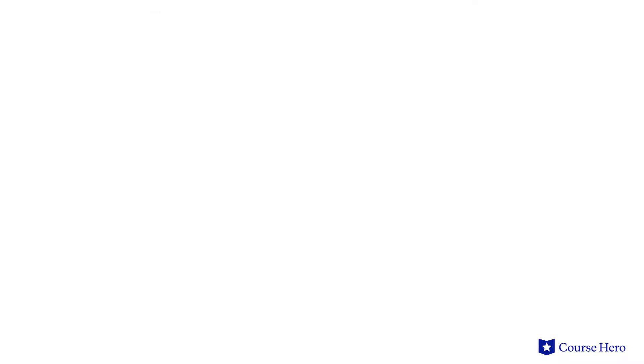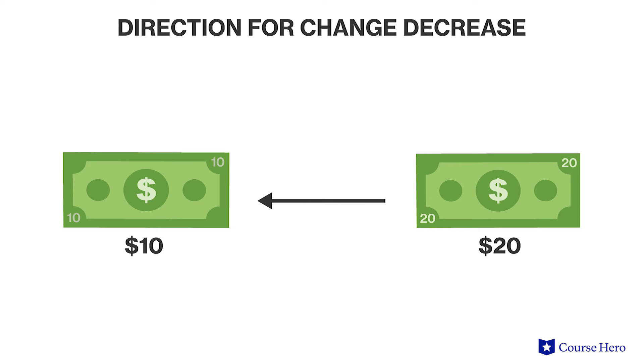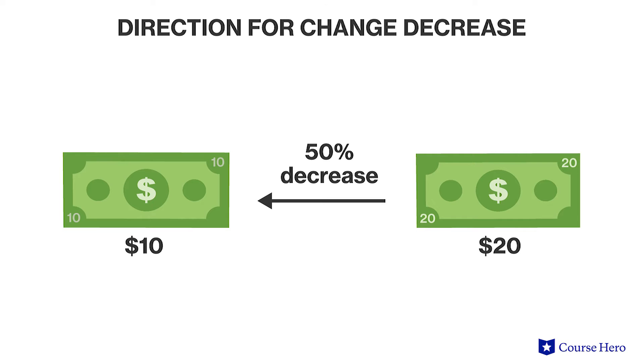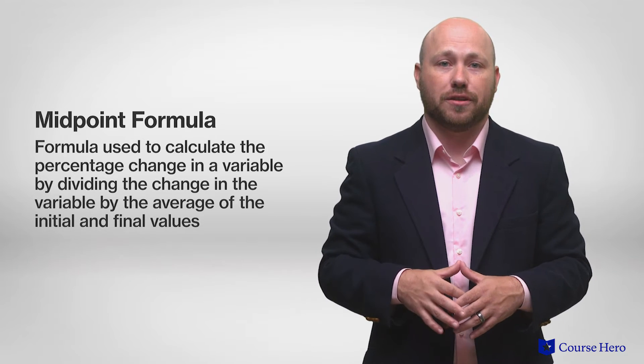One issue with elasticities is that the direction of change for percentages may skew the results. Moving from $10 to $20 is a 100% increase, but going the other direction is only a 50% decrease. Even though the range is the same, the percentage change is significantly different. To correct for this, you'll see elasticities based on the midpoint formula, which averages the percentage change.